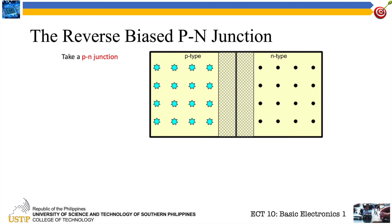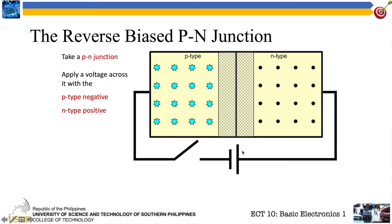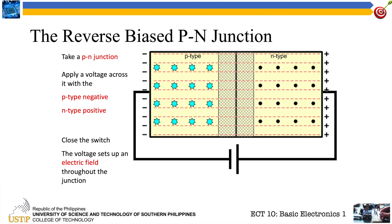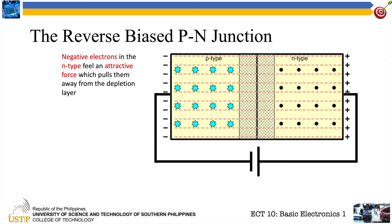Now let's take a p-n junction and observe the two types of biasing: reverse bias and forward bias. Let's apply a potential difference with p-type negative and n-type positive. According to Coulomb's Law, opposite charges attract. The n-type electrons are attracted toward the positive, and the holes are attracted the other way. Closing the switch, the voltage sets up an electric field throughout the junction, and this junction is said to be reverse biased.